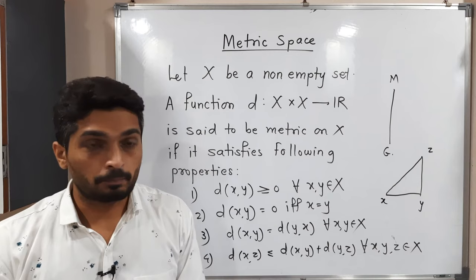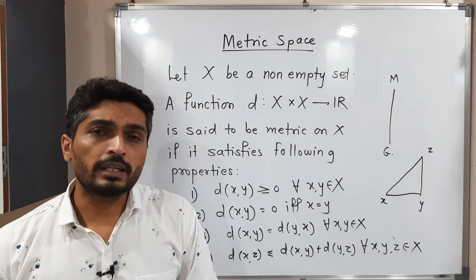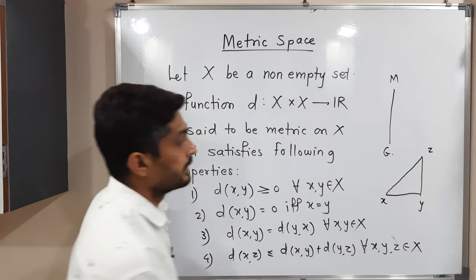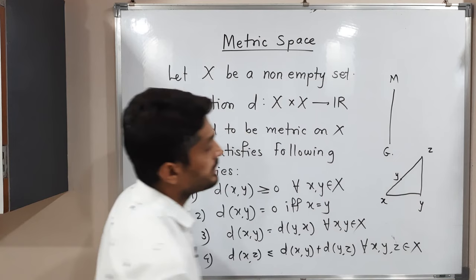Equality is also possible in the triangle inequality — it is less than or equal to. Equality holds when the point Y lies on the line segment XZ; then the left-hand side equals the right-hand side. That means if your point Y is on the segment XZ, then distance between X and Z equals distance between X and Y plus distance between Y and Z. This is the triangle inequality.